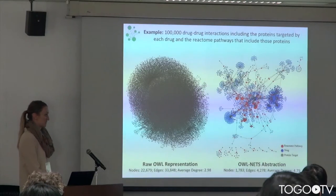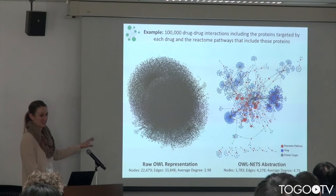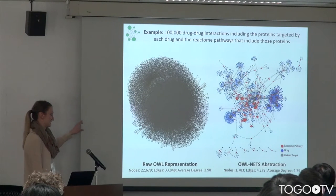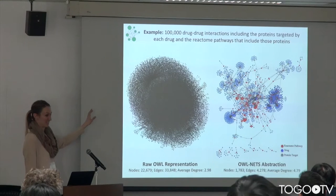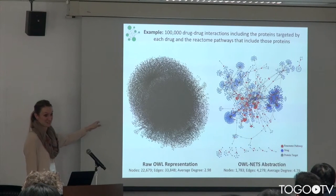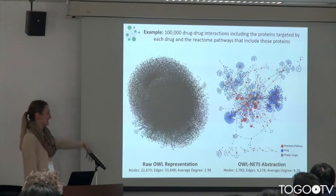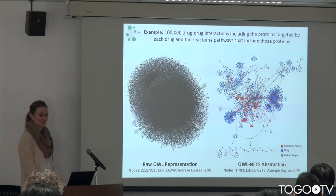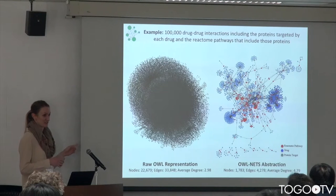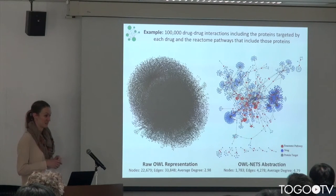A second example is a bit more complicated, so I haven't colored the OWL version. This is your stereotypical radiculogram — you really can't get much out of this other than it looks like a giant hairball. This query is looking at 100,000 drug-drug interactions from DrugBank, and the proteins targeted by each of those drugs, as well as the Reactome pathways that those drugs participate in.